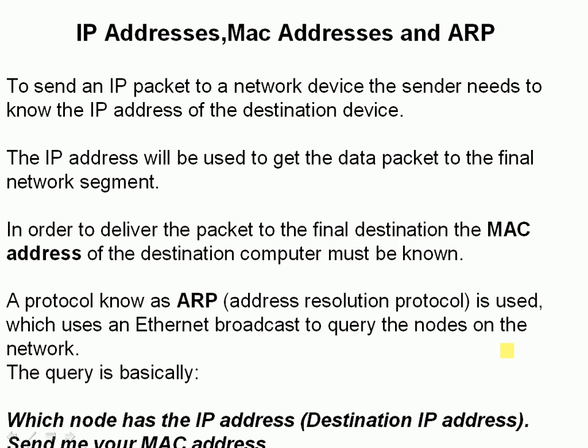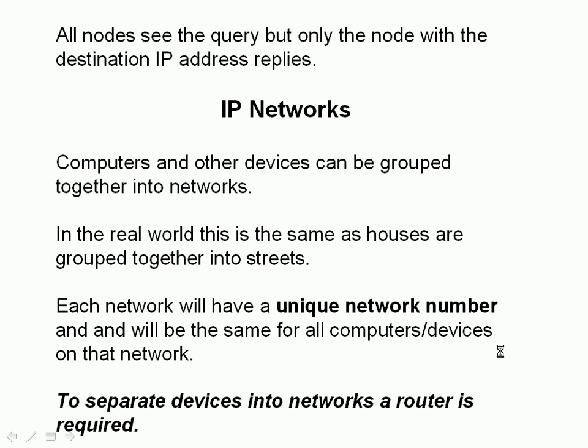IP addresses, MAC addresses, and ARP. To send an IP packet to a network device, a sender needs to know the IP address of the destination device. The IP address is used to route the packet and get it to the final network segment. In order to deliver the packet to the final destination, it also needs to know the MAC address. A protocol called ARP — Address Resolution Protocol — is used: it broadcasts an Ethernet query on the local network asking which node has a given IP address. The node with that IP address responds, saying that's my IP address and here is my MAC address. Then the sender knows the MAC address of the destination and can send the packet directly. All nodes see the query, but only the node with the destination IP address responds.